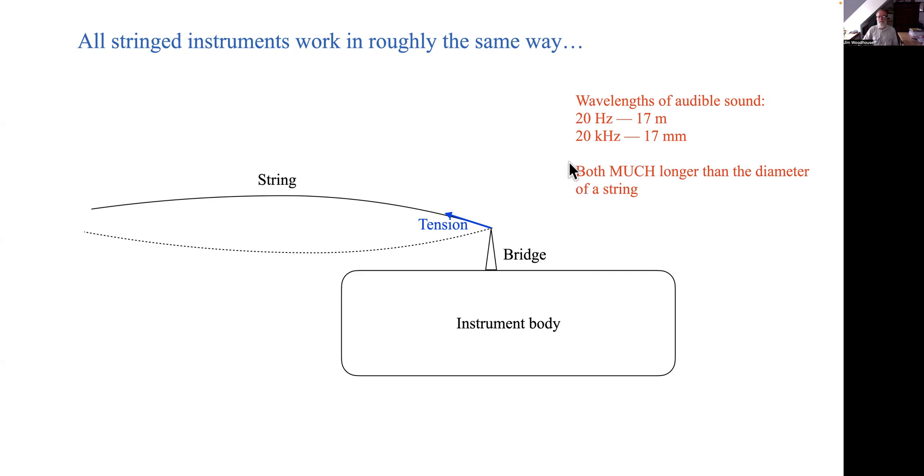Remember we talked about wavelengths of sound in air and what we found were these two numbers: at the limits of human hearing, the wavelength of sound varies from 17 meters down to 17 millimeters. But even 17 millimeters is much much bigger than the diameter of a typical musical string which is more like one millimeter.